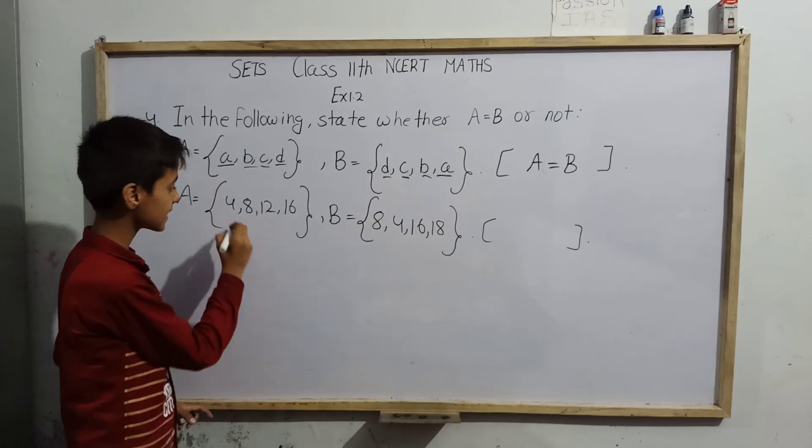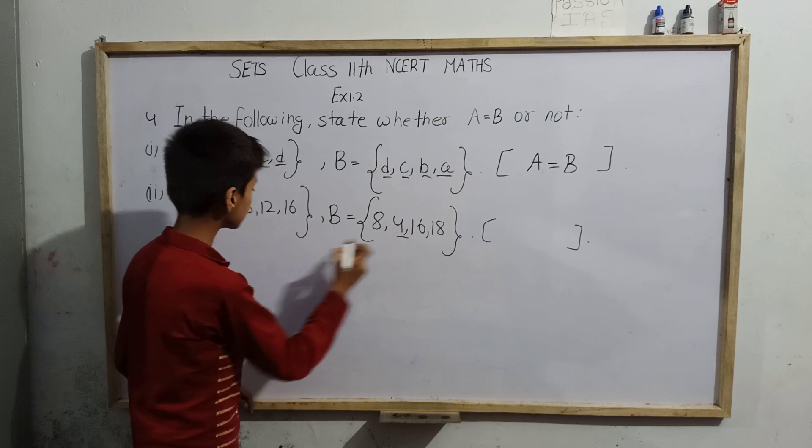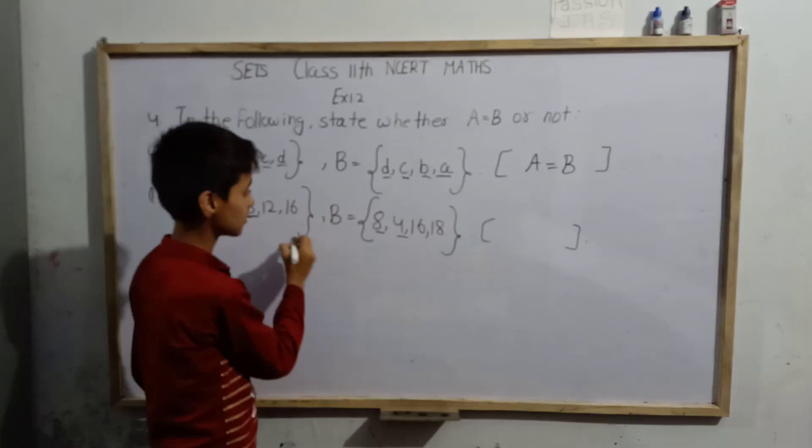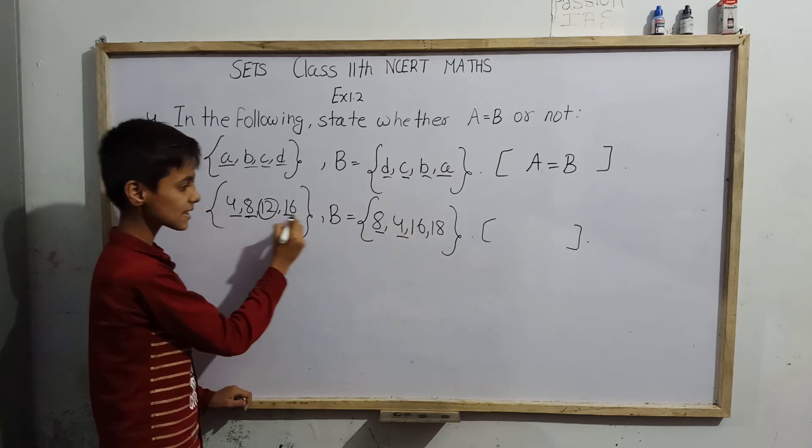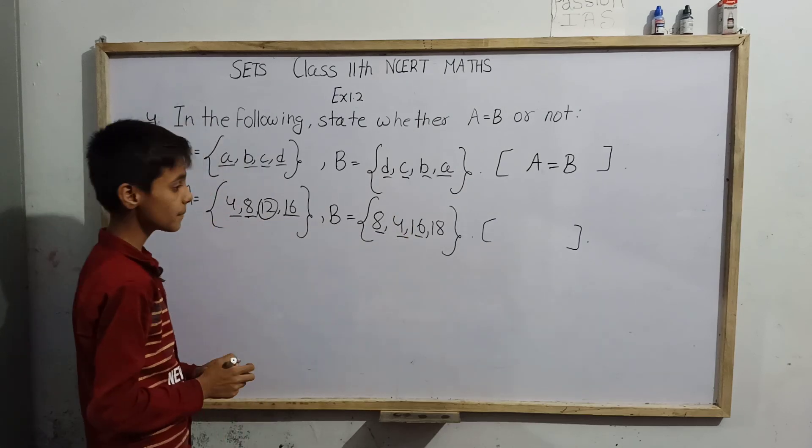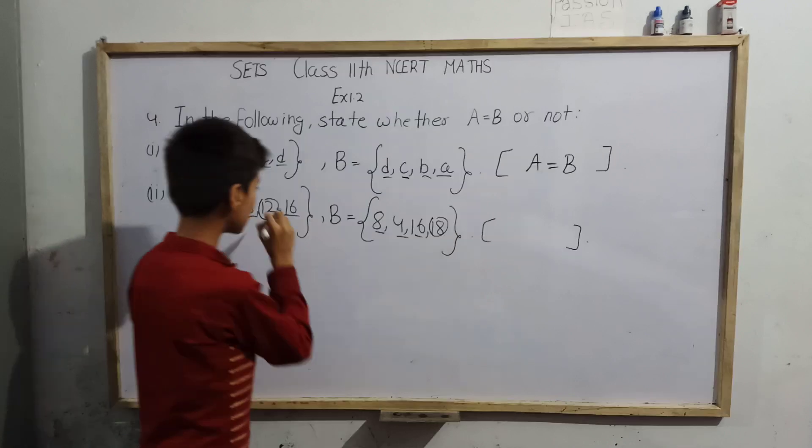Next, we can see 8 is present in both. Now 12 - that is not in this. 16 is present in both. Now, 18 is here - that is not in this. Missing 12.